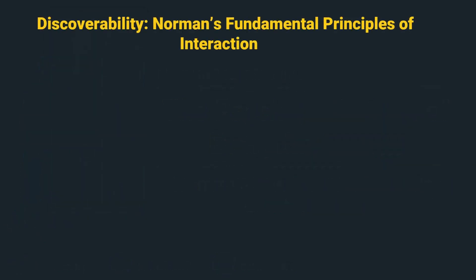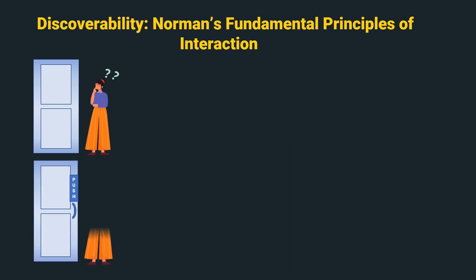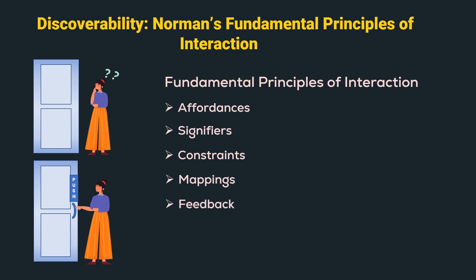In the previous video, we learnt that whenever we interact with an object, we need to discover what it does, how it works, and what operations are possible. Discoverability and understanding are the two main characteristics of a good design. Products should be designed in a human-centred approach to make human-machine interactions pleasurable. Discoverability results from appropriate application of the following fundamental principles of interaction: affordances, signifiers, constraints, mappings, feedback, and conceptual model.